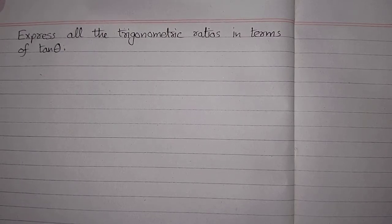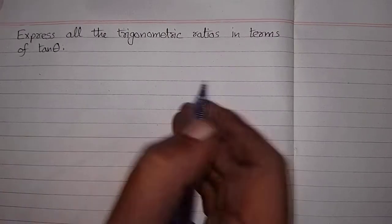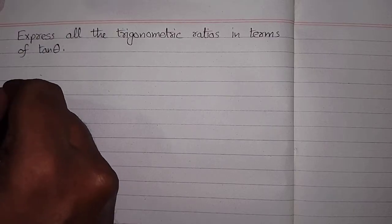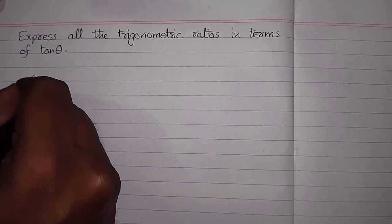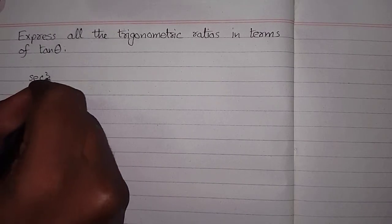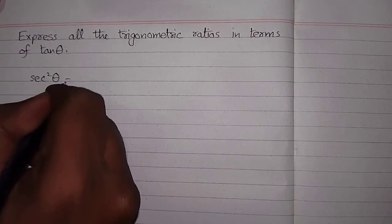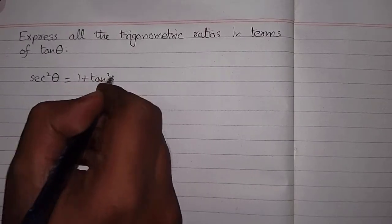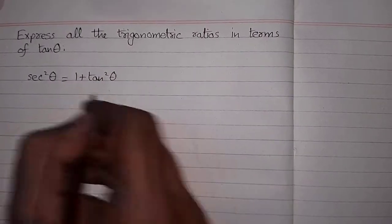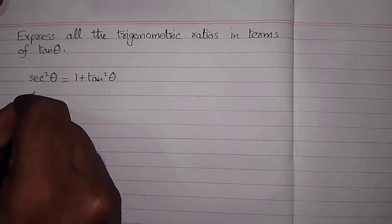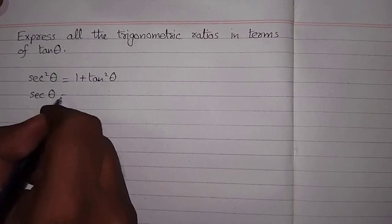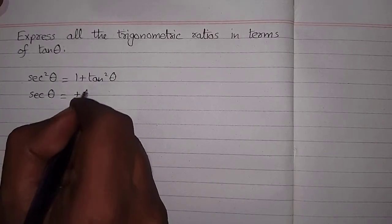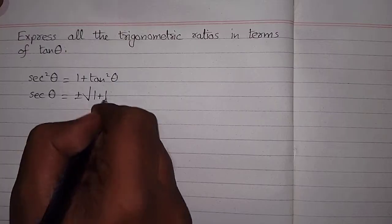Express all the trigonometric ratios in terms of tan theta. First of all, we know that sec squared theta is equal to 1 plus tan squared theta, so sec theta is equal to plus or minus square root of 1 plus tan squared theta.